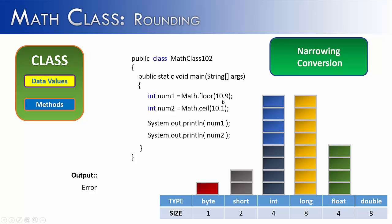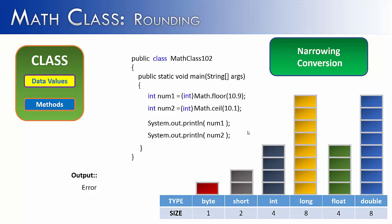Well, with numbers as low as 10.1 and 10.9, it's not going to be a problem, but we will have to make a typecast to accommodate. So if we add the typecast in front of Math.floor and Math.ceil, it would then convert the result into an integer.